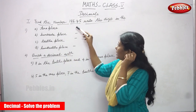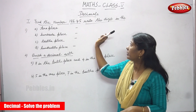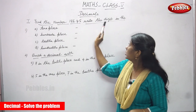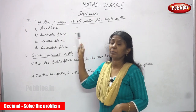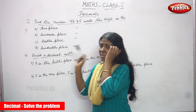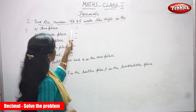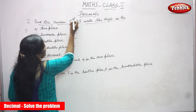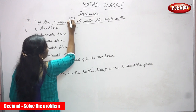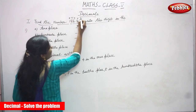So look at the number 186.45. You must write the digits. What is the number in the tens place? See, this is ones, this is tens, this is hundreds. This is tens and this is hundreds.